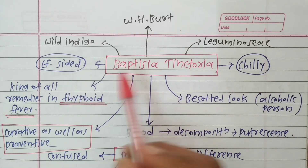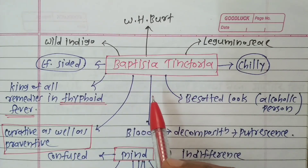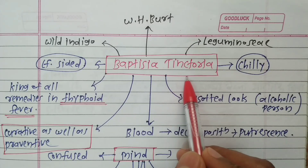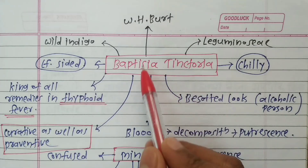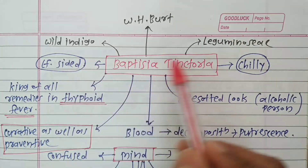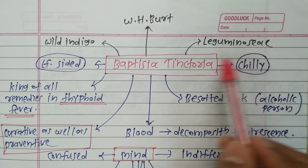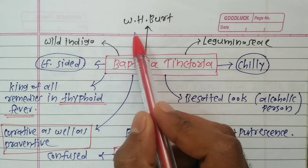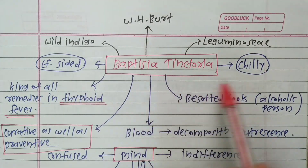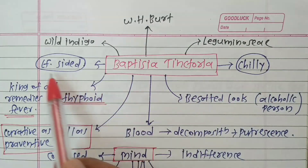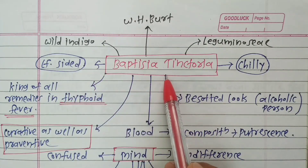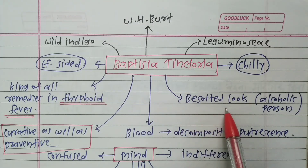Today we look at the remedial mind map of Baptisia tinctoria. The common name is wild indigo, the family is Leguminosae. The patient is chilly, and it is a left-sided remedy. The patient is mostly intoxicated — like an alcoholic person.